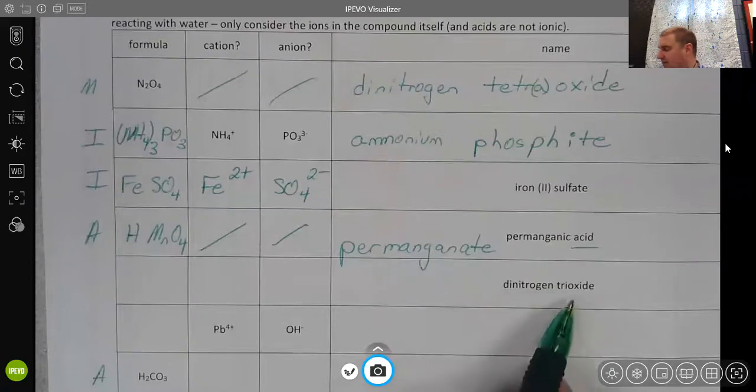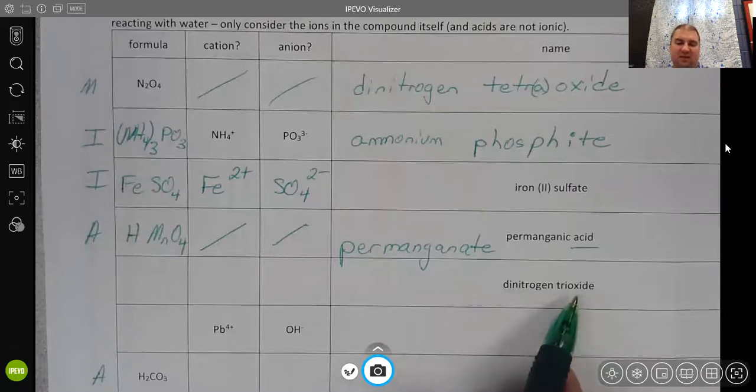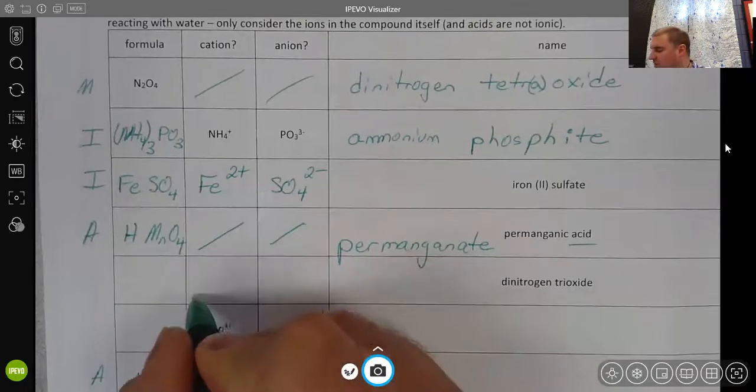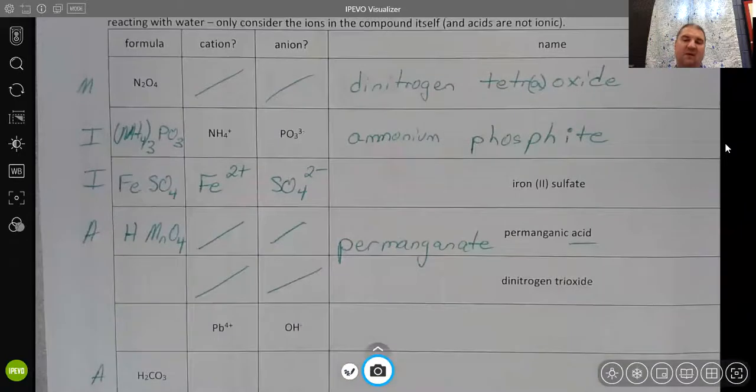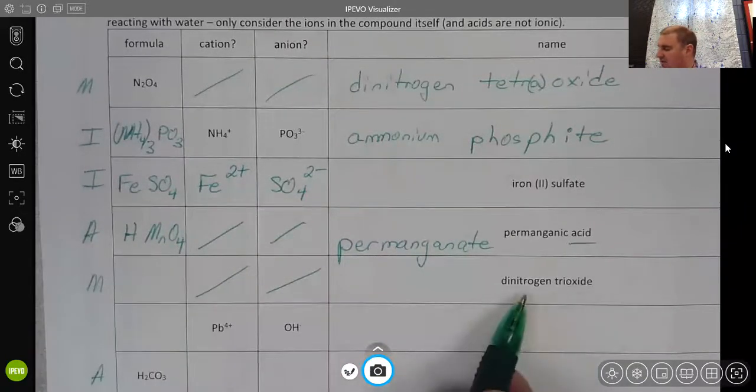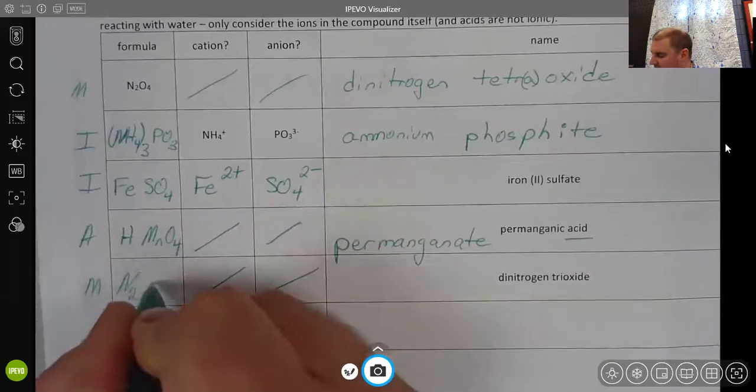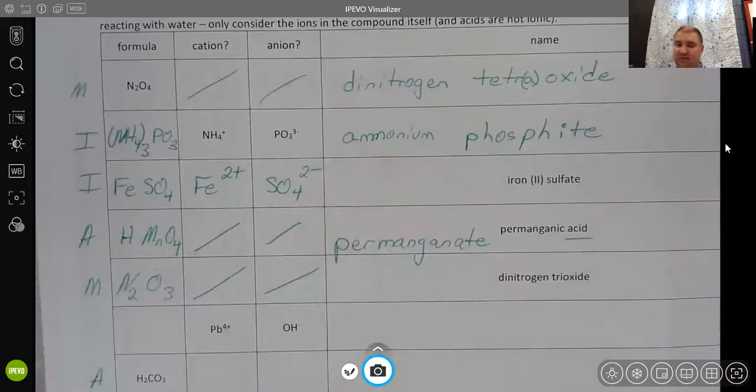Dinitrogen trioxide, we should be thinking, again, we see prefixes, and more so than that, we see two nonmetals. We see nitrogen and oxygen again. So prefixes and two nonmetals tells us this is going to be a molecular compound, and so we just simply take the prefixes and say how many of those elements there are. So there are two nitrogens and three oxygens.